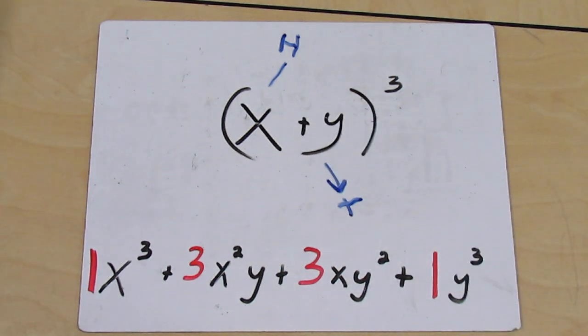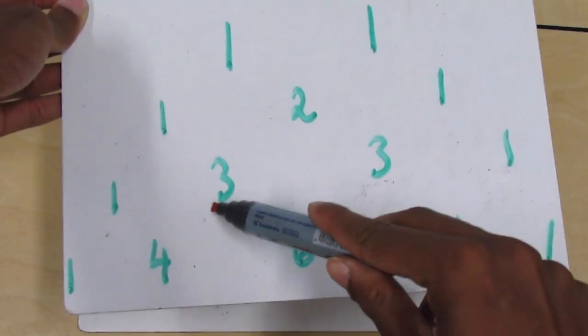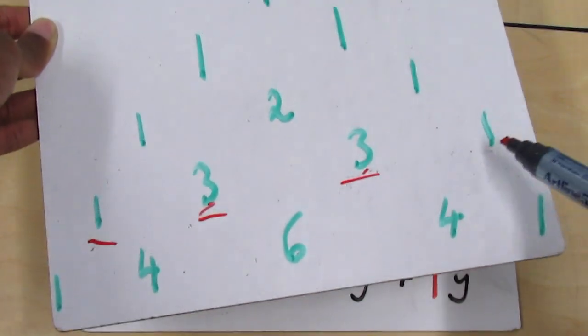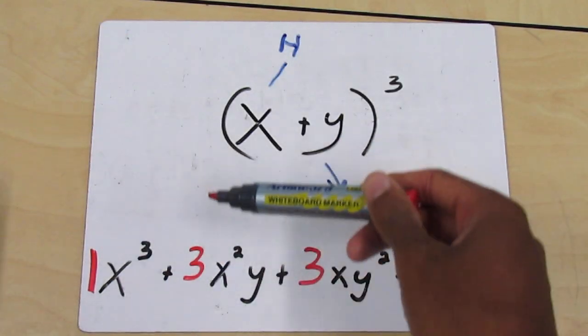So you go to Pascal's Triangle and you look at the row that has a 3 in it, and you have your coefficients 1, 3, 3, and 1. So you take those coefficients and attach them onto your expanded equation.